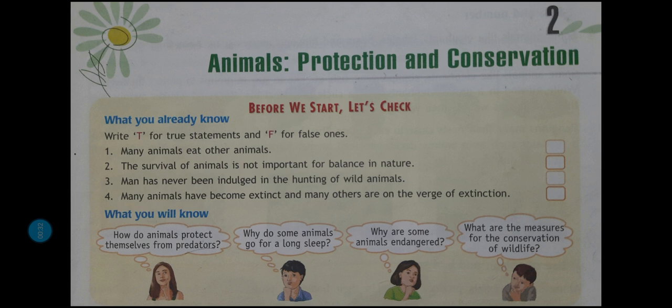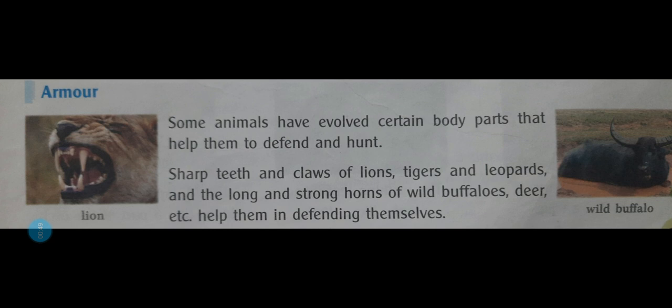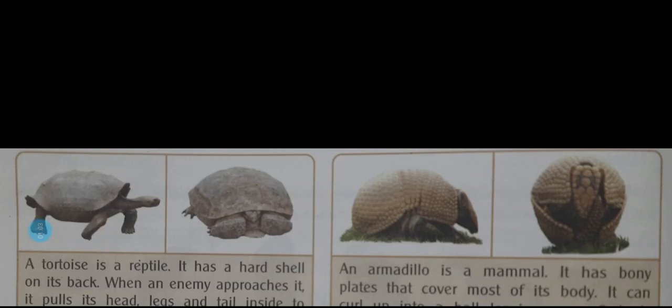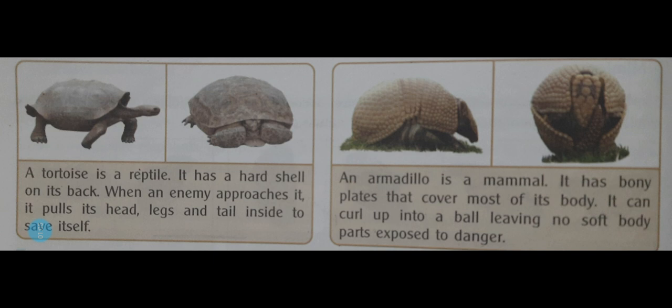We discussed about lion and wild buffalo — God has given them horns. Wild buffalo has horns, deer have horns, and leopards, tigers, and lions have claws, so that they can protect themselves from predators and enemies. There are a few more animals which come under the topic of armor, who also have special features in their body structure to protect themselves.